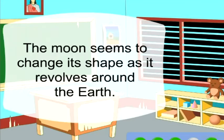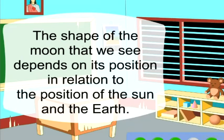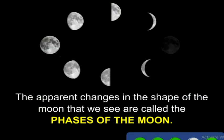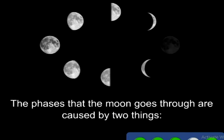The moon seems to change its shape as it revolves around the Earth. The shape of the moon that we see depends on its position in relation to the position of the sun and the Earth. The apparent changes in the shape of the moon that we see are called the phases of the moon. The phases that the moon goes through are caused by two things.